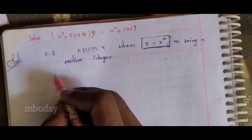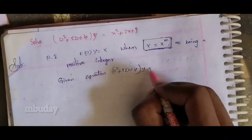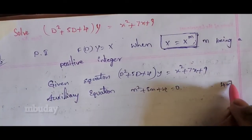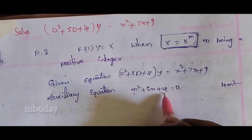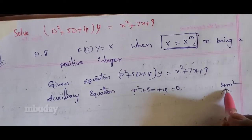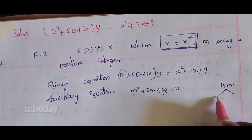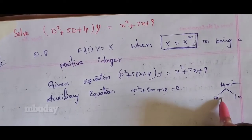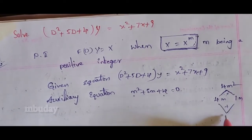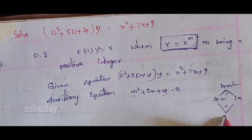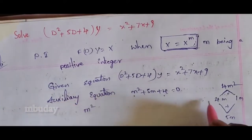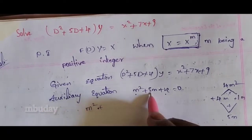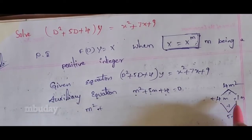First, we will solve the auxiliary equation. First term into last term — multiply to get 4. Looking at the factors: 4 into 1 is 4, and 1 plus 4 equals 5. So we write M squared plus 4M plus 1M plus 4, which gives M squared plus 5M plus 4.